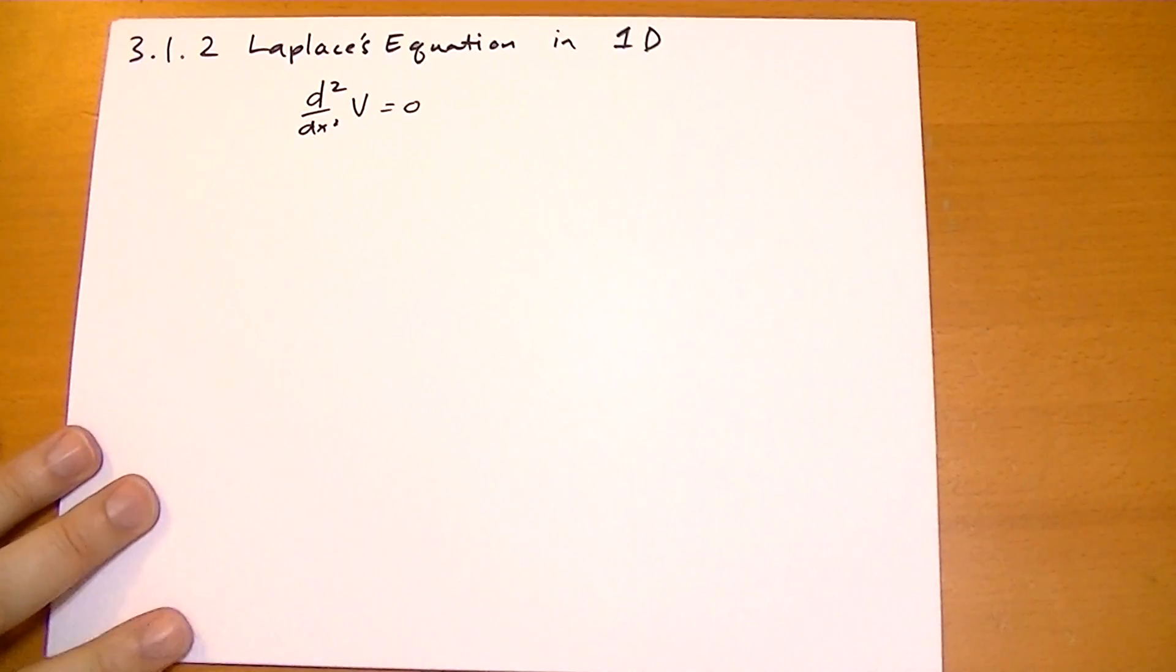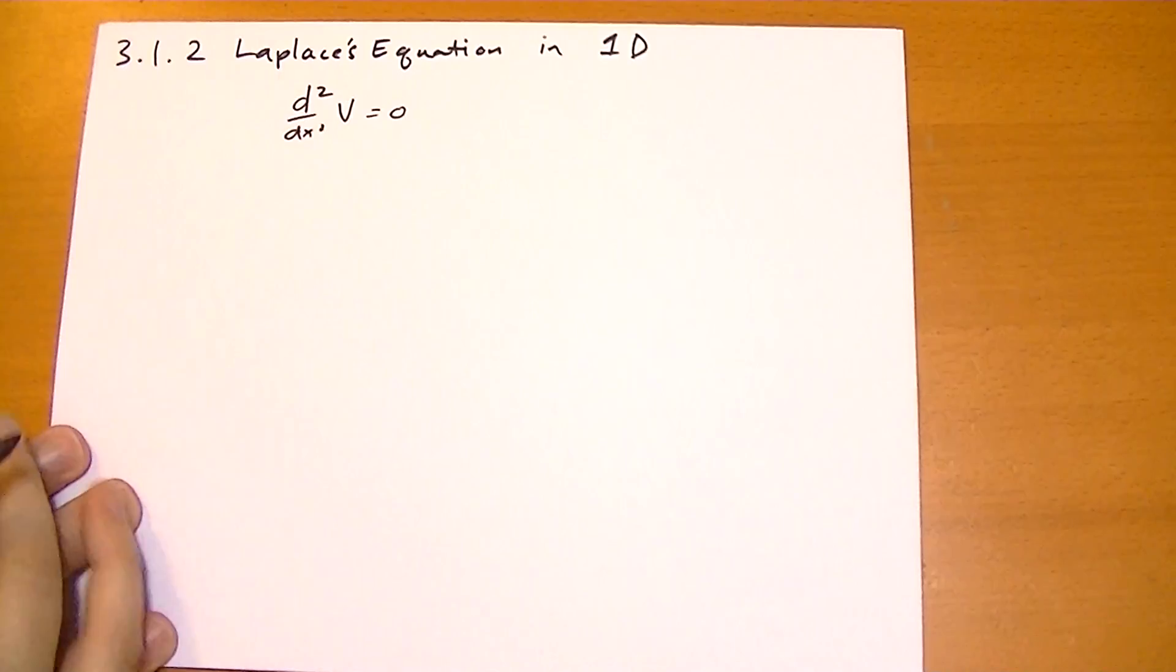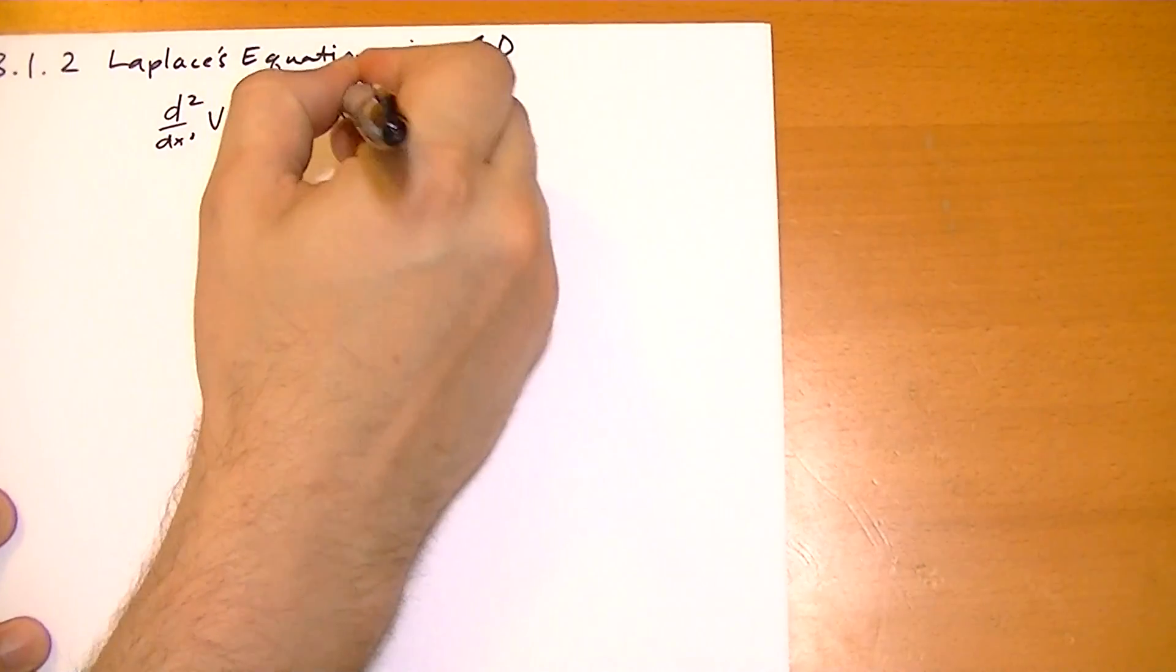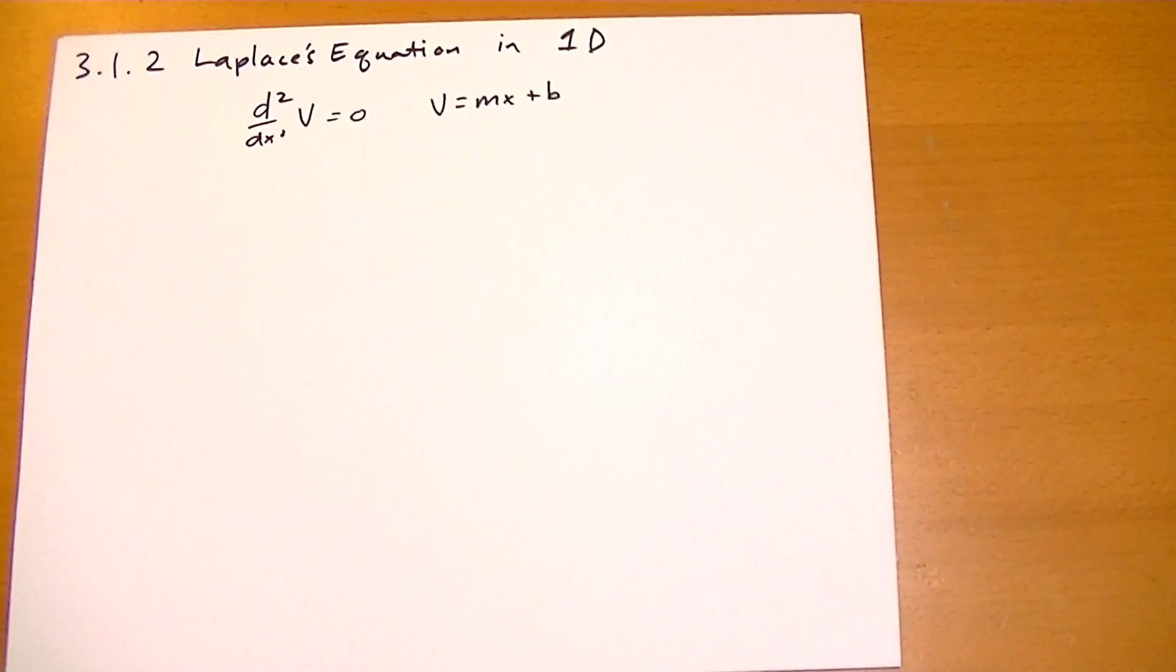Now, if you've taken your basic physics course, you should recognize that this basically says the acceleration is 0, so you have something with constant velocity. Okay. So there's a solution for that, the general solution.